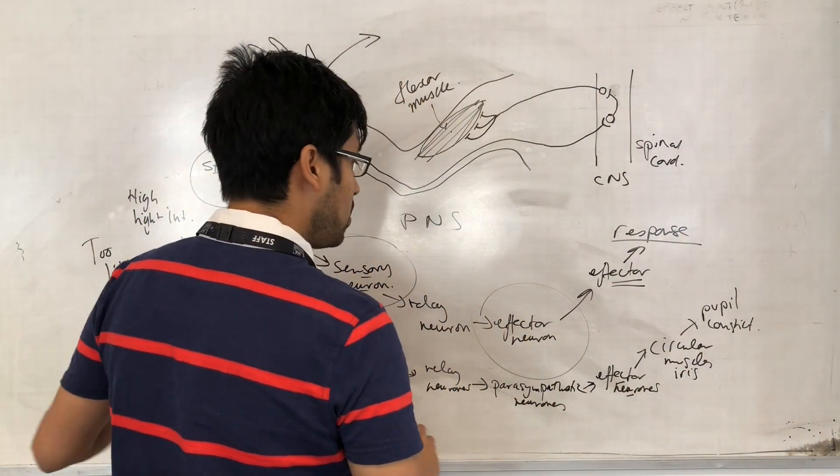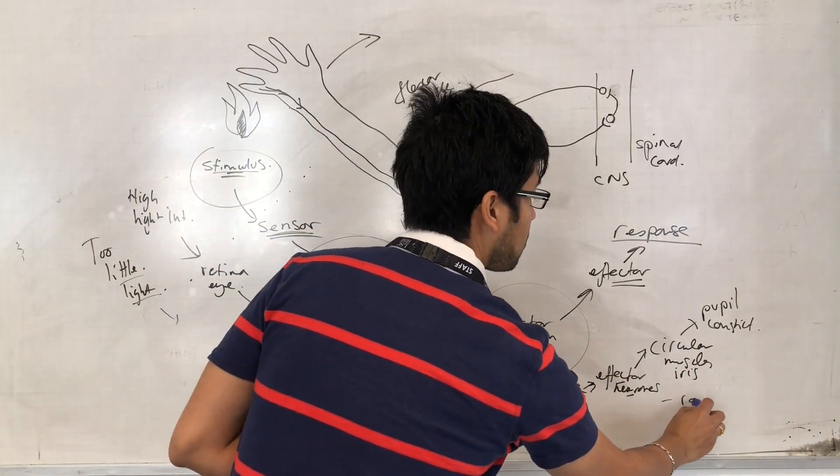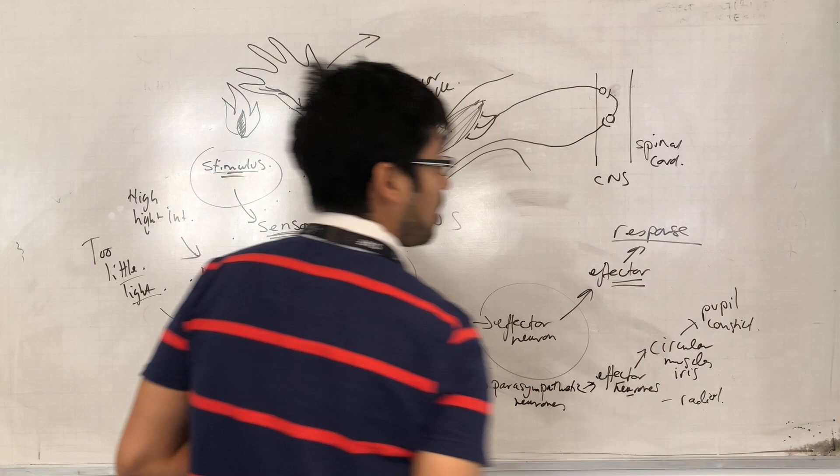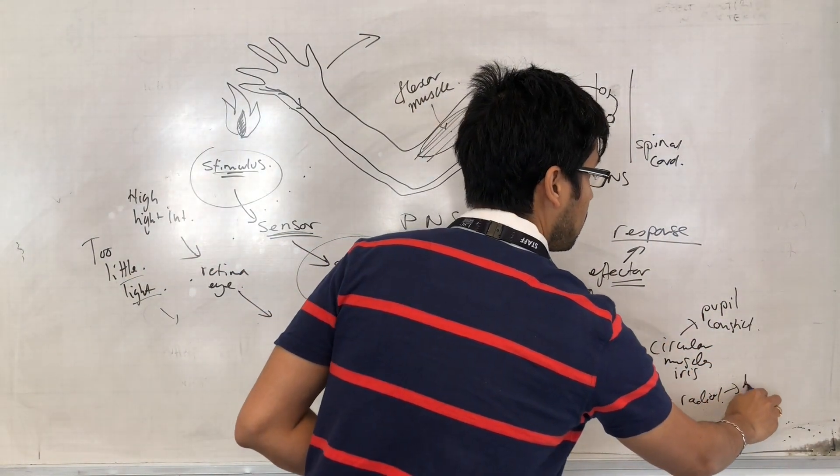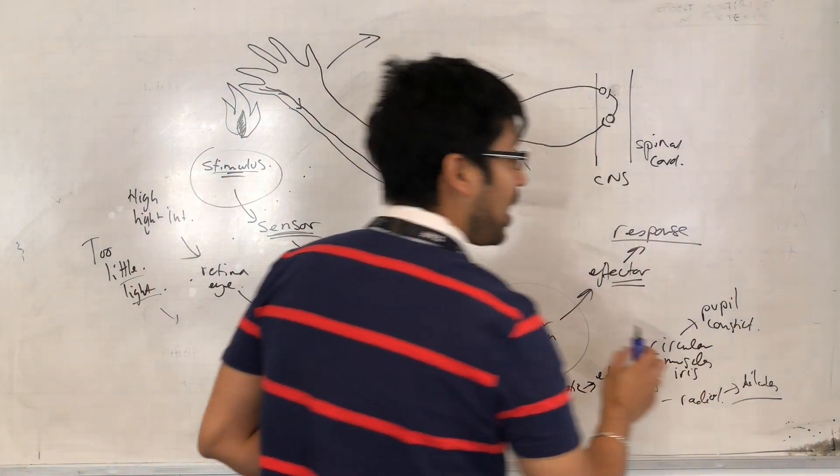So if there's too little light, we want to contract the radial muscles, and when the radial muscles contract, the pupil dilates.